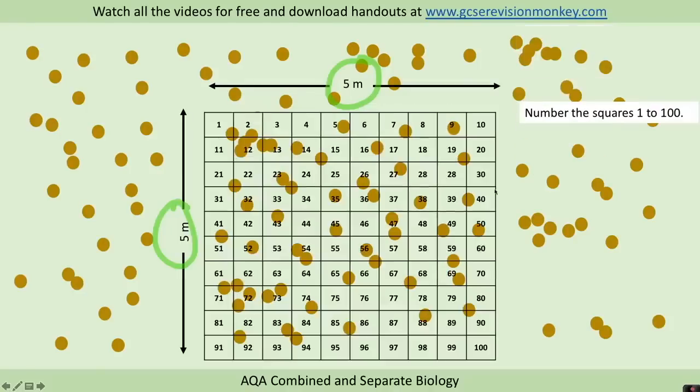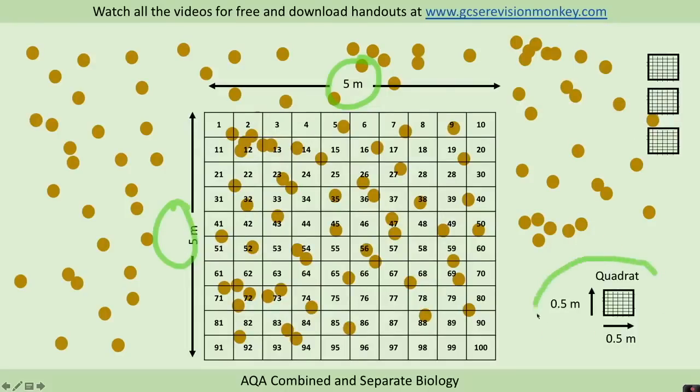The most important thing with random sampling is we use a grid called a quadrat. The one I'm going to use in this example is a 0.5 meter by 0.5 meter quadrat. In the exam it may well be a different size, but that's absolutely fine.